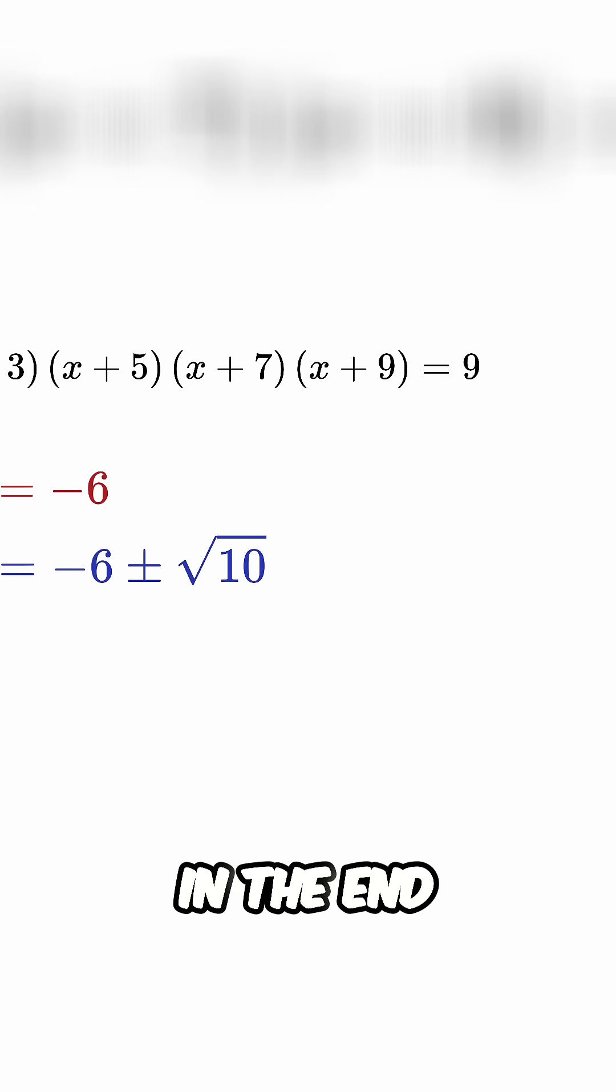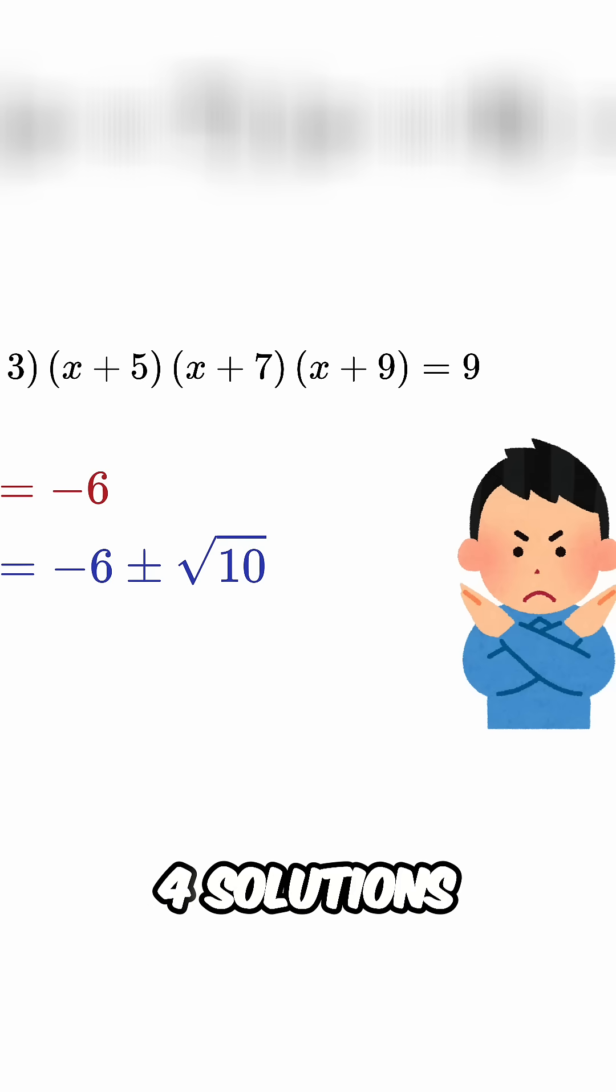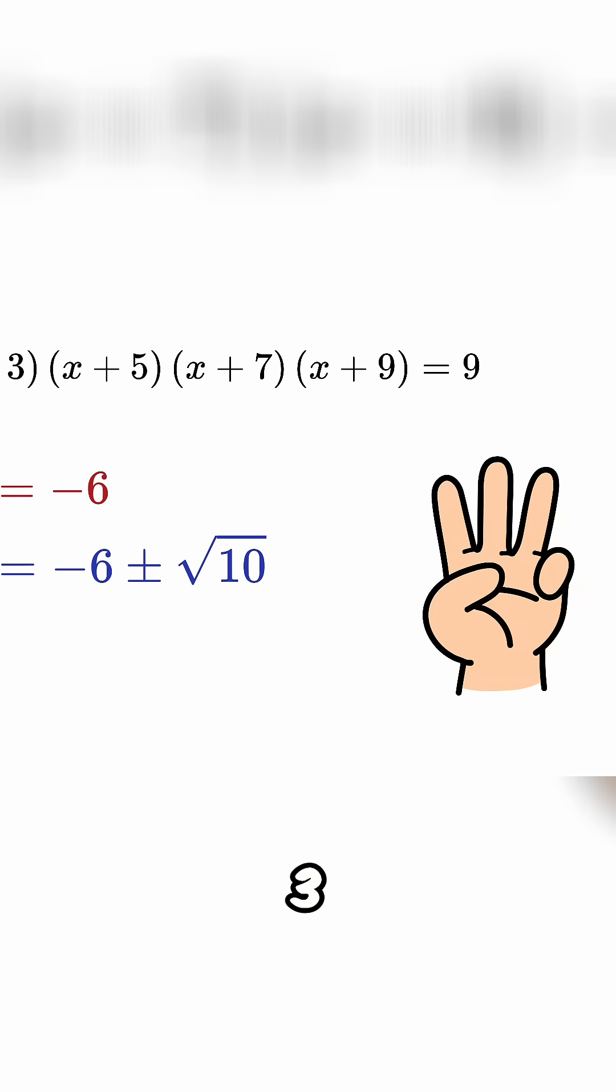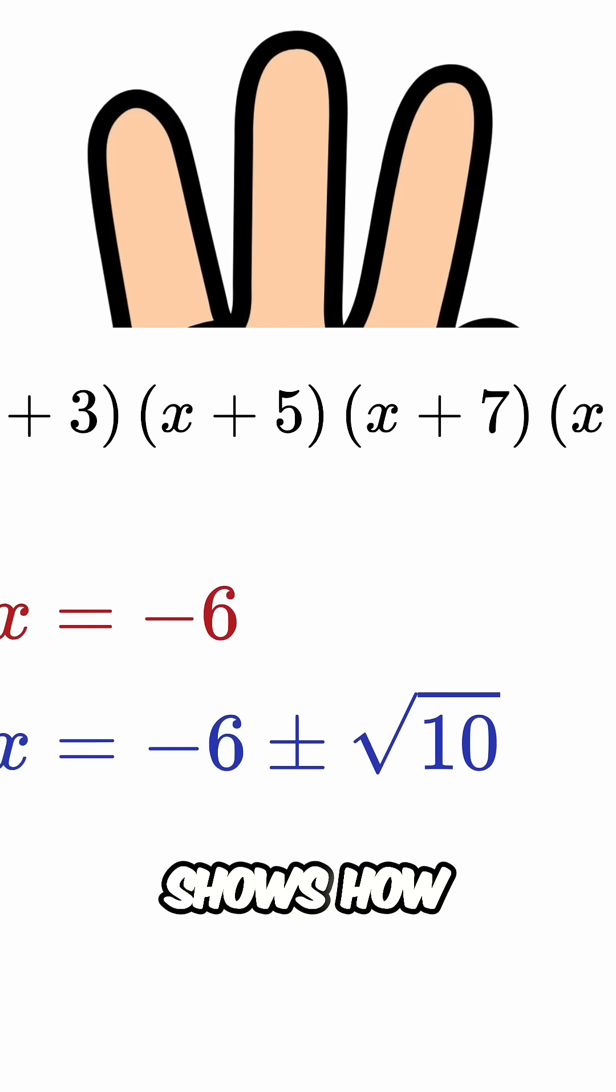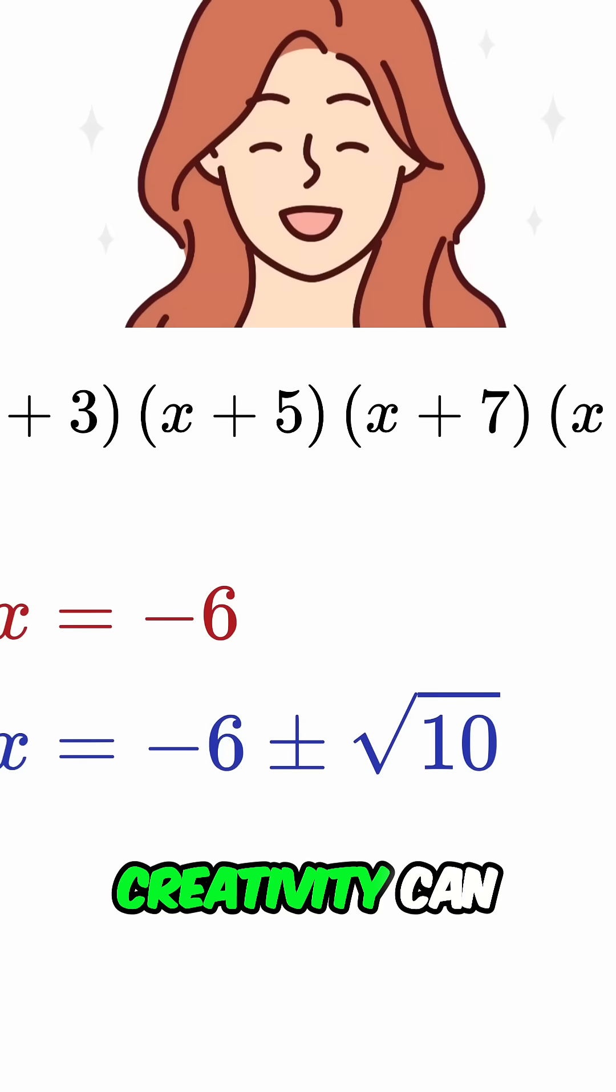So in the end, we don't actually get 4 solutions like we might expect from a quartic equation. We get just 3. This just shows how a little creativity can turn a seemingly complex equation into something surprisingly elegant. This is an example of